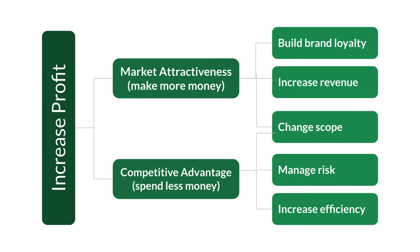It's worth showing this graphic from the content strategy ROI chapter in Bailey and Rubina's book. A content inventory and audit will only be valuable if their results can be used to make a business more profitable — how can the details and data you're collecting be used to make more or spend less money? The project team must continuously and explicitly connect back to the value of existing content to build brand loyalty, increase revenue, manage risk, increase efficiency, and consider changing scope. Regardless of the care with which you produce your inventory and audit, if you're not making these connections, your content strategy work will ultimately fail.